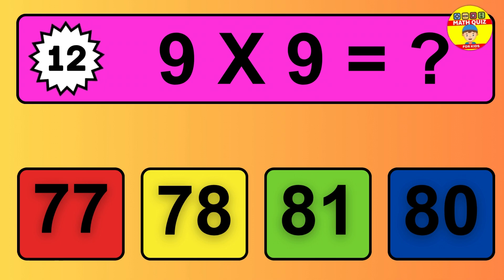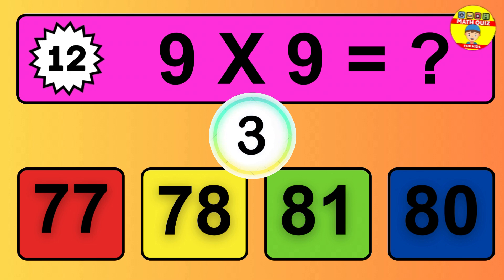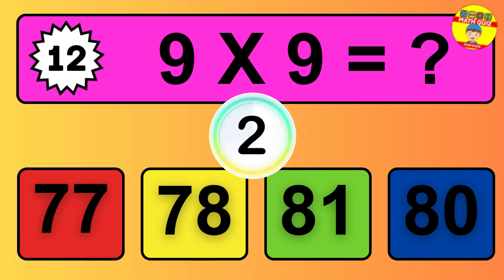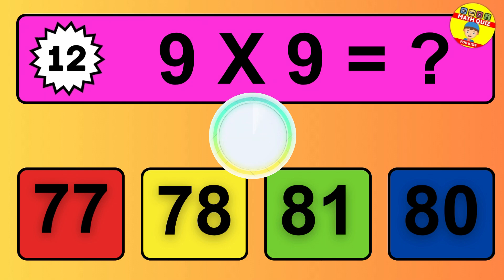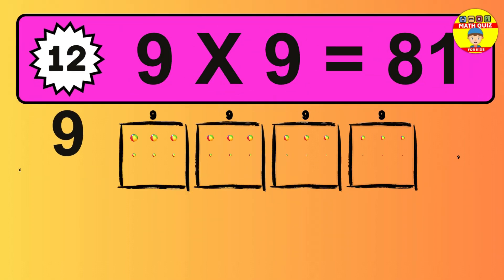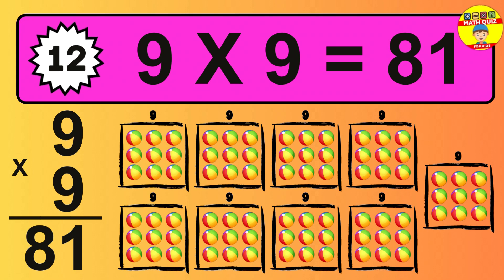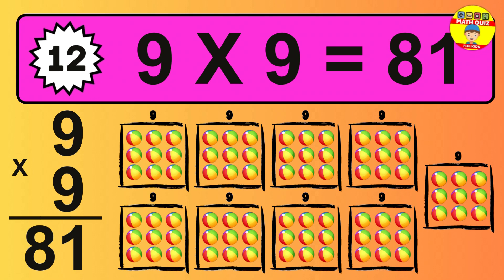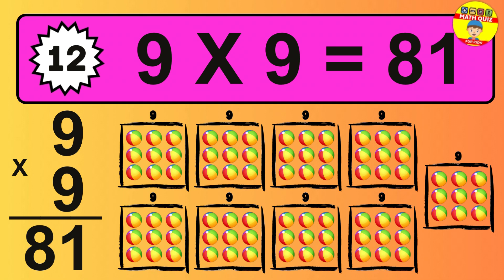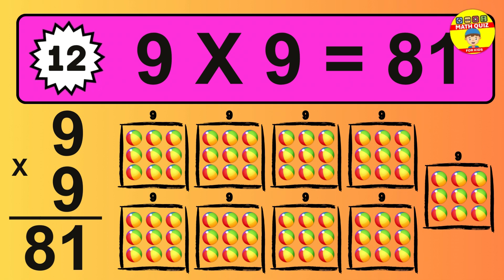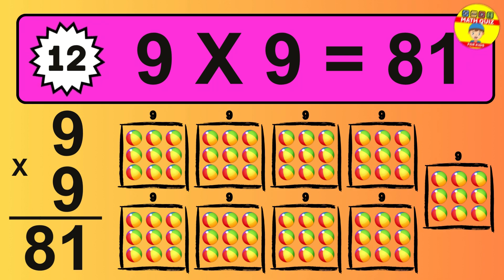Question 12. 9 times 9 equals what? The answer is 9 times 9 is 81. To calculate, we have 9 groups with 9 balls each one. So how many balls do we have? 81 balls.